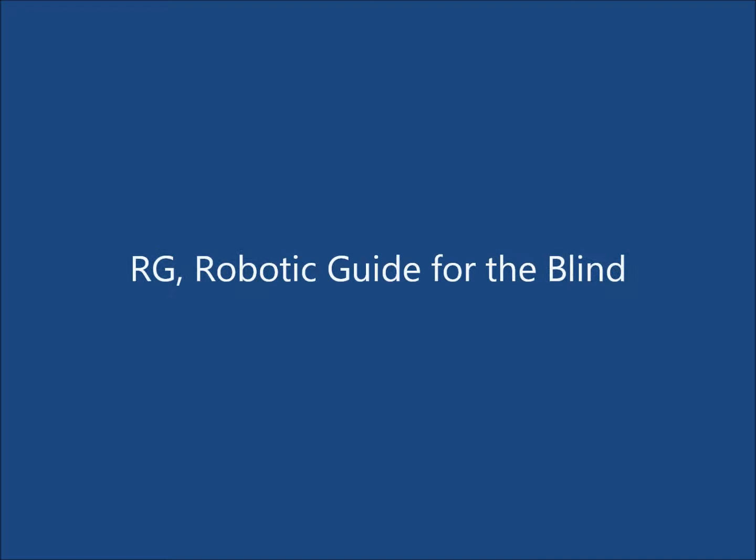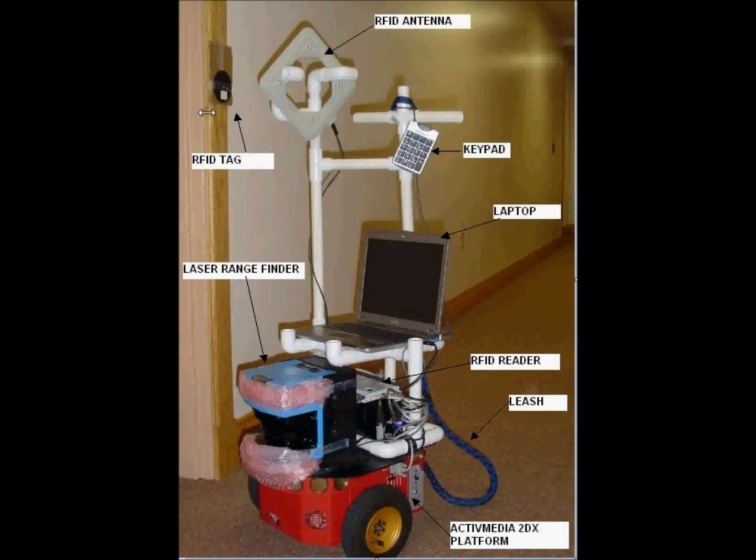The first one is RG, which stands for Robotic Guide for the Blind. It was developed as a robotic guide for visually impaired individuals in structured indoor environments. So it detects these passive RFID tags through its RFID antenna. The ID of each tag is sent to the antenna and then eventually makes its way to the laptop on the robot. And that's how RFID is making its navigation decisions. And the local obstacle avoidance is done through this laser rangefinder.